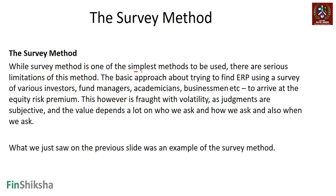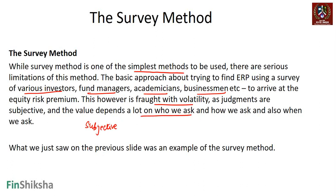However, the survey method has limitations. Typically you don't go to the general public but to investors, fund managers, academicians, and businessmen to arrive at the number. This is fraught with volatility as all these judgments are subjective — the value depends a lot on who we ask, how we ask, and when we ask. Depending on who, when, and how, the number could be volatile and may just resonate with current market conditions, which can get really subjective.